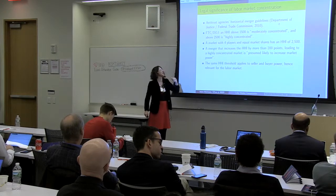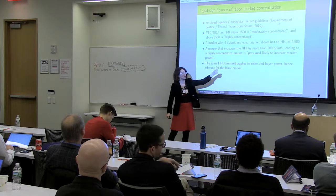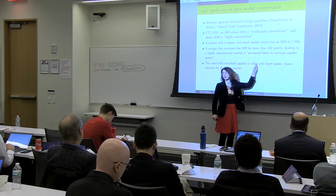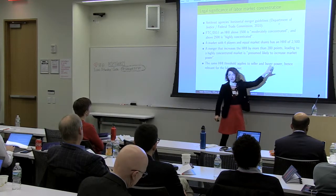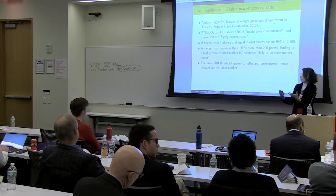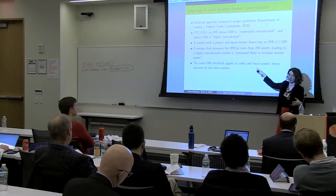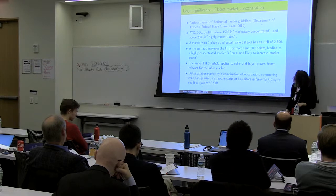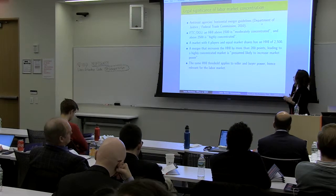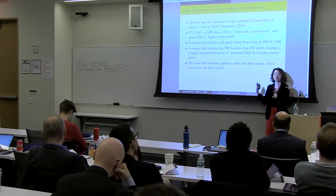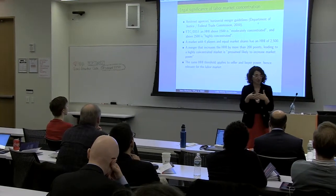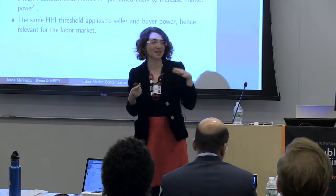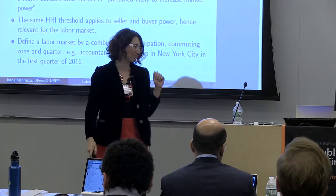Critically, the same HHI threshold applies both to the seller side and the buyer side. The classic antitrust case looks at seller-side power, such as the telecom market. But I want to talk about buyer power — a buyer that has market power over the sellers beneath them. In the labor market, this is employer power: the power of a buyer over sellers of labor. Therefore, it is appropriate to apply labor market HHI analysis to determine whether mergers that significantly increase labor market concentration should be blocked. This is within the horizontal merger guidelines, but it hasn't happened yet.